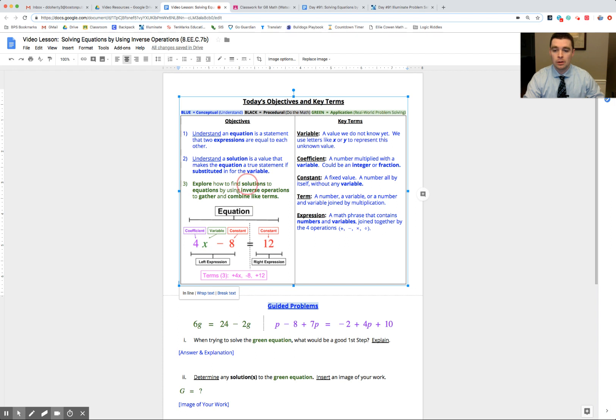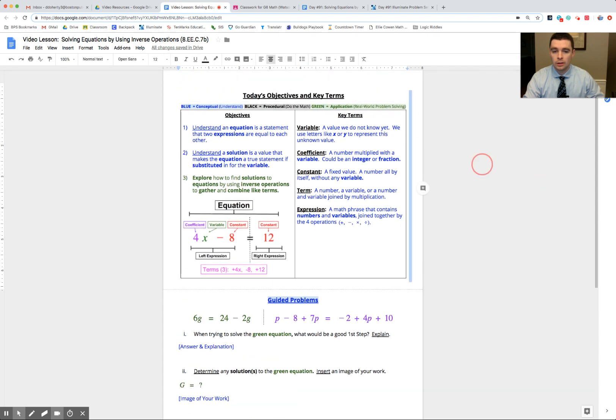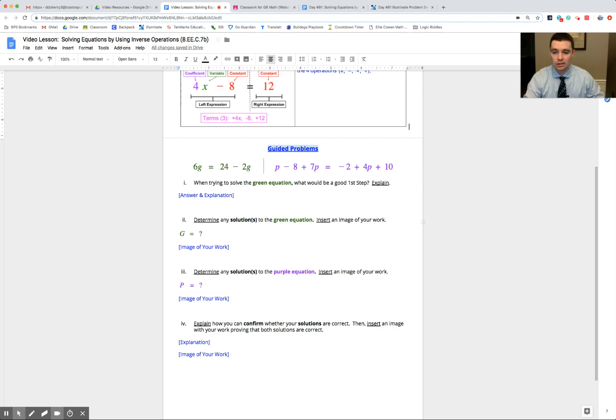We're going to be talking about using inverse operations to gather and combine like terms. We're going to talk more today about what all those fancy phrases mean. In short, they mean we're going to use opposite operations to cancel terms out so that we can get all the variable terms on one side and then all of the constant terms on the other side of the equation.